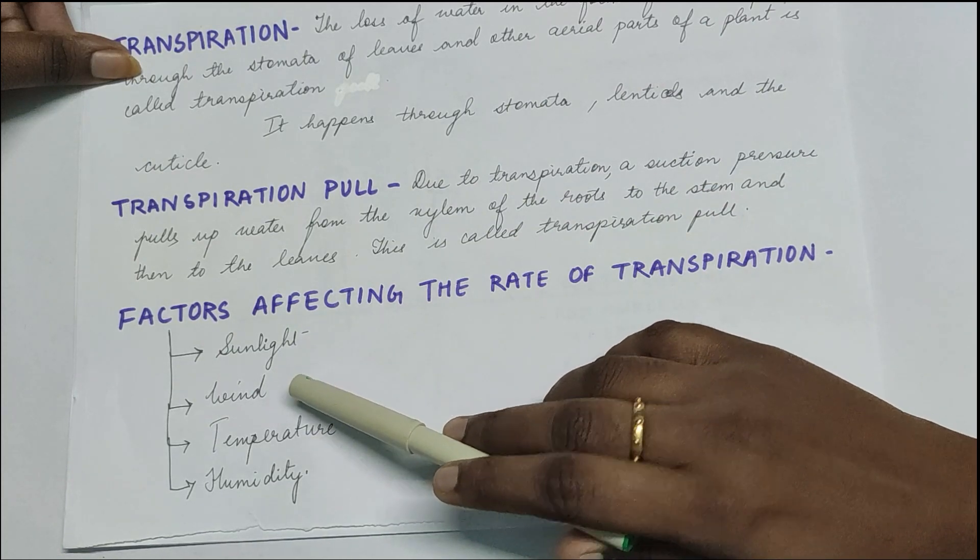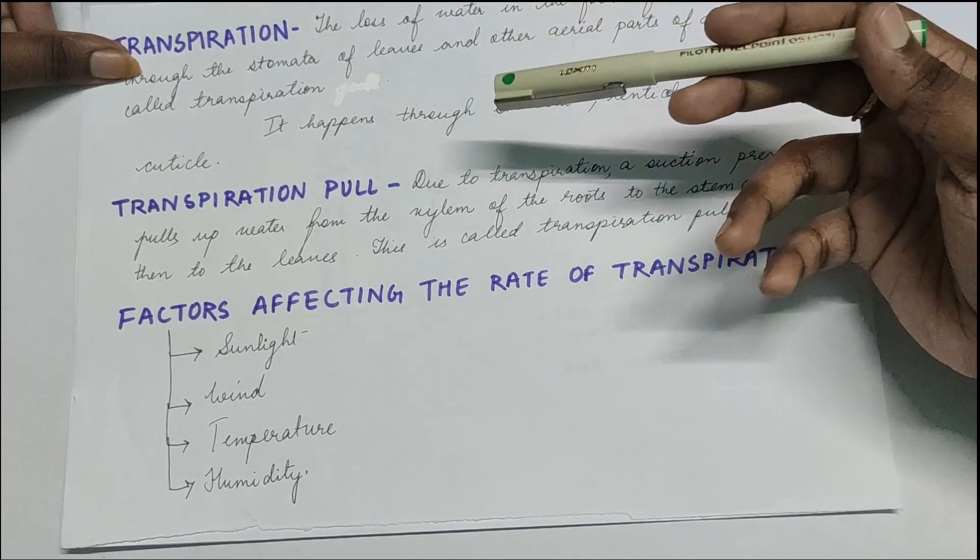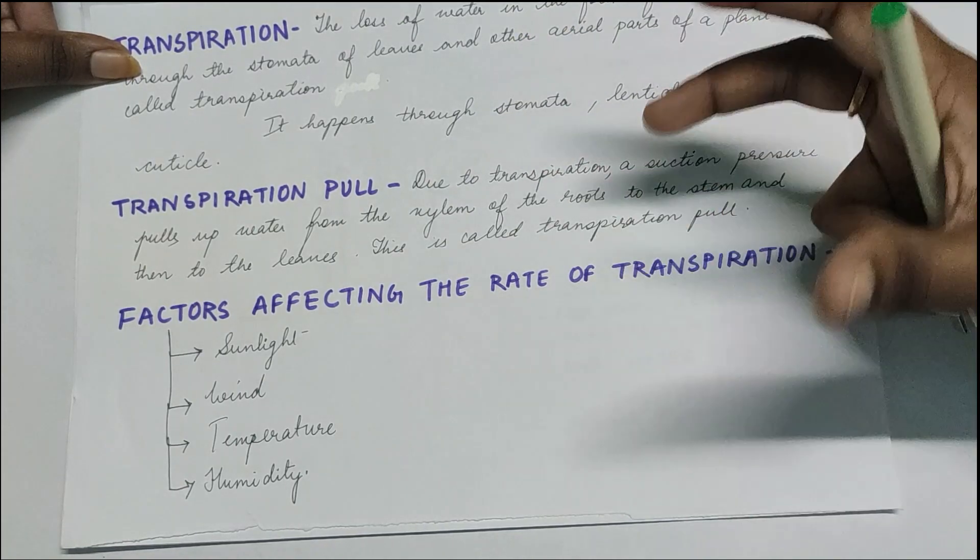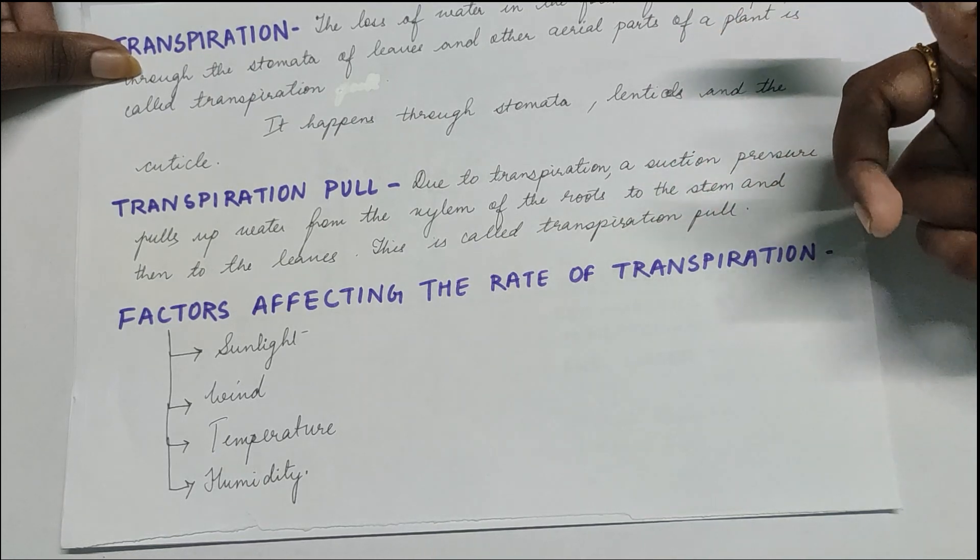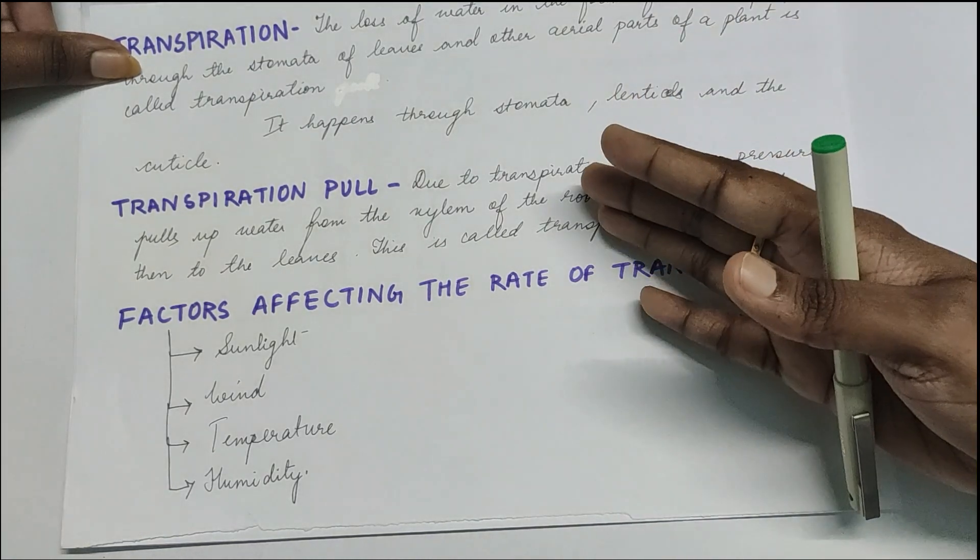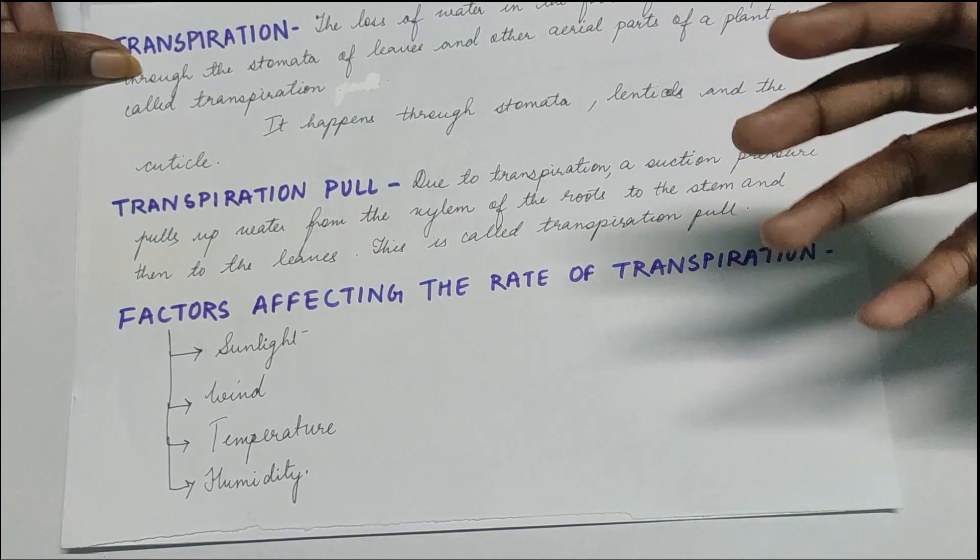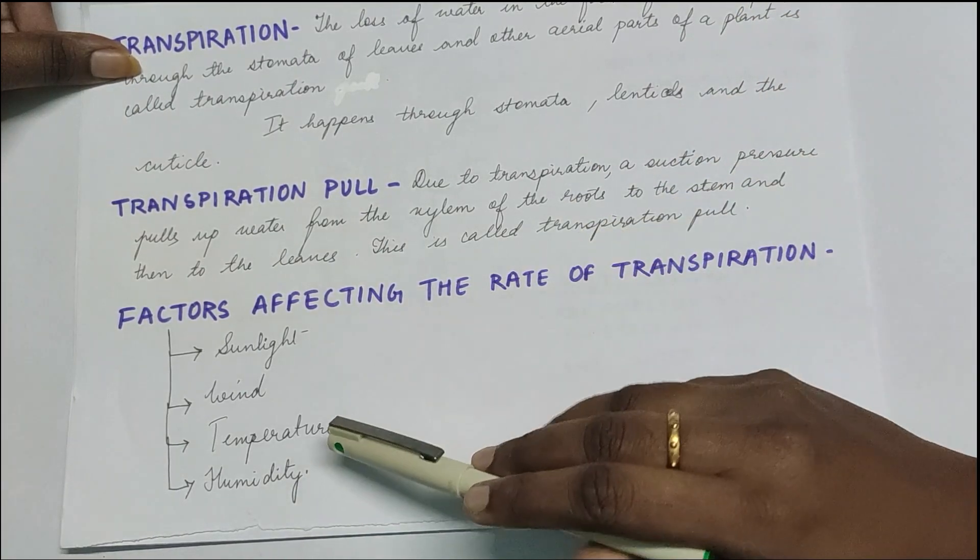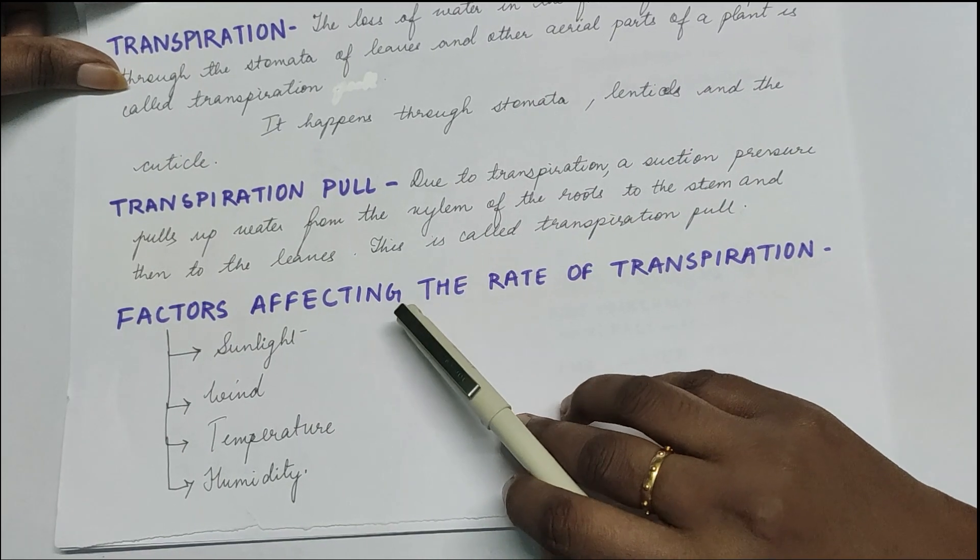Then we go to wind. If you see there is more wind, then the transpiration rate is also high because whatever water is coming out by transpiration in the form of water vapor, that will be carried away by the wind. So there will be more space for the more water vapor to come out. Then temperature - when we talk about temperature, higher temperature generally causes more transpiration.